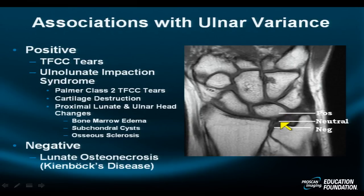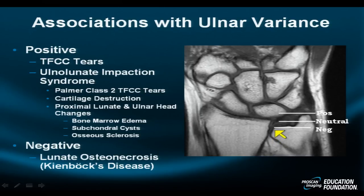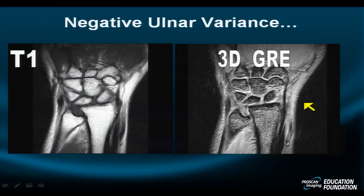What about negative variance posture, where the ulna is shorter than the non-styloidal portion of the radius? These patients are at risk for Kienböck's disease, also known as lunate osteonecrosis. There is another entity with a high incidence in patients with negative ulnar variance posture: capsulitis, stretching of the peripheral attachments, micro-instability of the extensor carpi ulnaris, and extensor carpi ulnaris disease and tears.